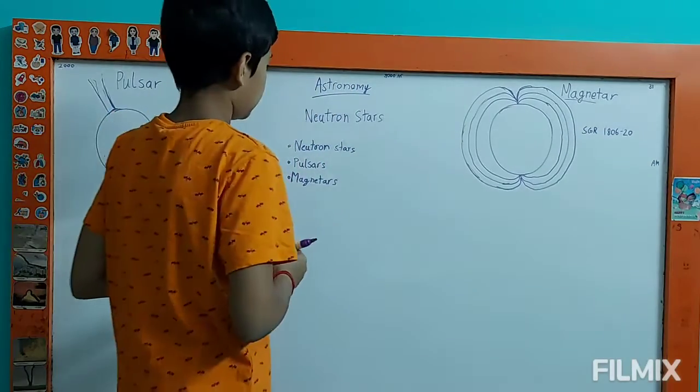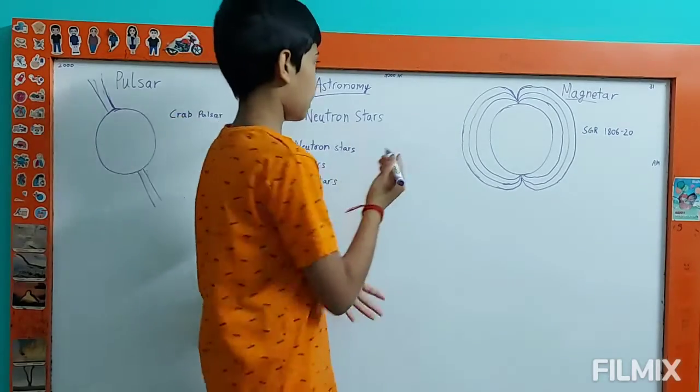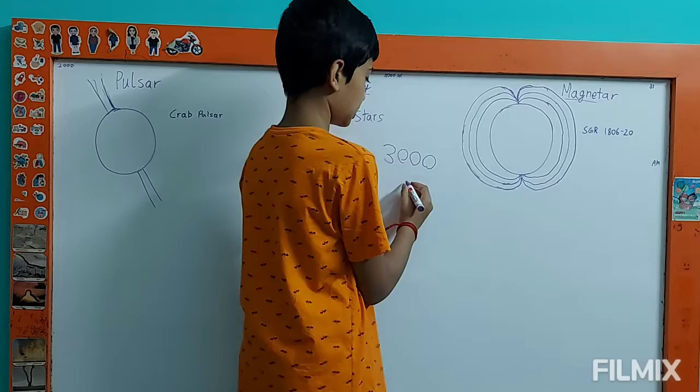Neutron stars. There are three types: normal neutron stars, pulsars and magnetars. There are 3,000 currently discovered neutron stars.